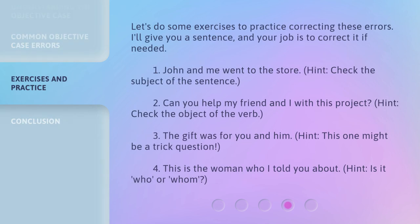Let's do some exercises to practice correcting these errors. I'll give you a sentence, and your job is to correct it if needed. Number 1: 'John and me went to the store.' Hint: Check the subject of the sentence. Number 2: 'Can you help my friend and I with this project?' Hint: Check the object of the verb. Number 3: 'The gift was for you and him.' Hint: This one might be a trick question.